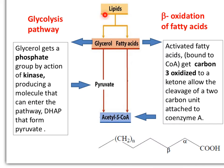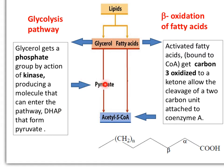The metabolism of lipids requires the hydrolysis of the ester bonds of triesters of glycerol. Triglycerides will be hydrolyzed by lipases to produce one unit of glycerol and three fatty acids. The unit of glycerol will undergo phosphorylation by a kinase to produce an intermediate of the glycolysis pathway — the hydroxyacetone phosphate — which can be transformed into acetyl-coenzyme A.